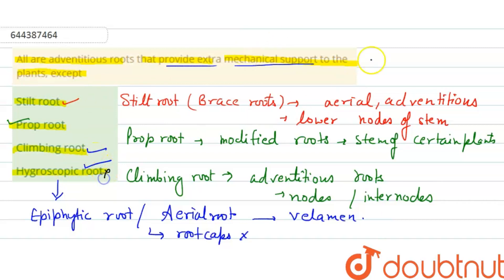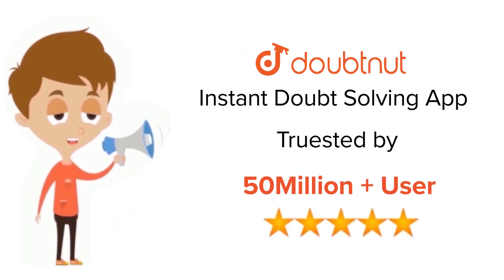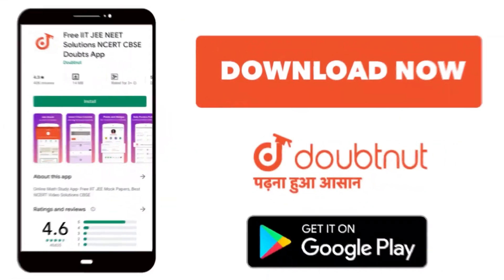So here our right answer is the option D. I hope this will answer your question. Thank you. For Class 6 to 12, IIT-JEE and NEET level, trusted by more than 5 crore students. Download Doubtnut app today.